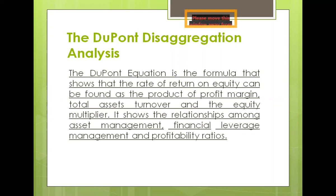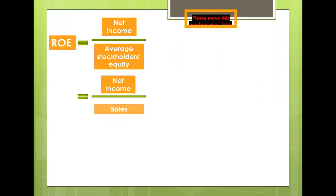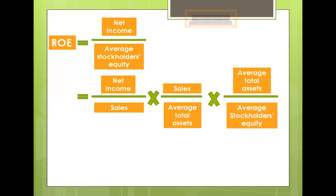This aggregation of return on equity was initially introduced by IE DuPont and company to help its managers in performance evaluation. The basic DuPont model disaggregates ROE as follows. Return on equity is equal to the net income divided by the average stockholder's equity, or is equal to net income divided by sales times sales divided by average total assets times average total assets divided by average stockholder's equity.